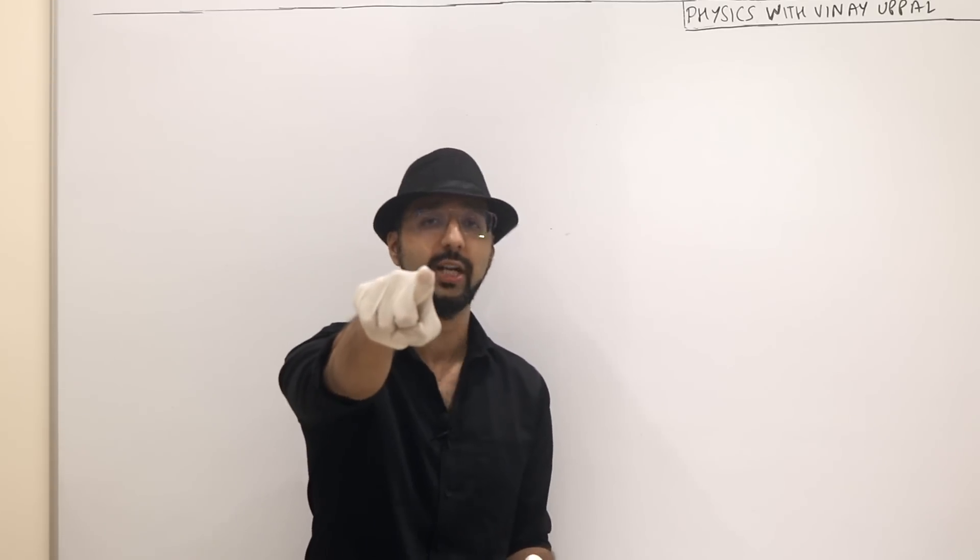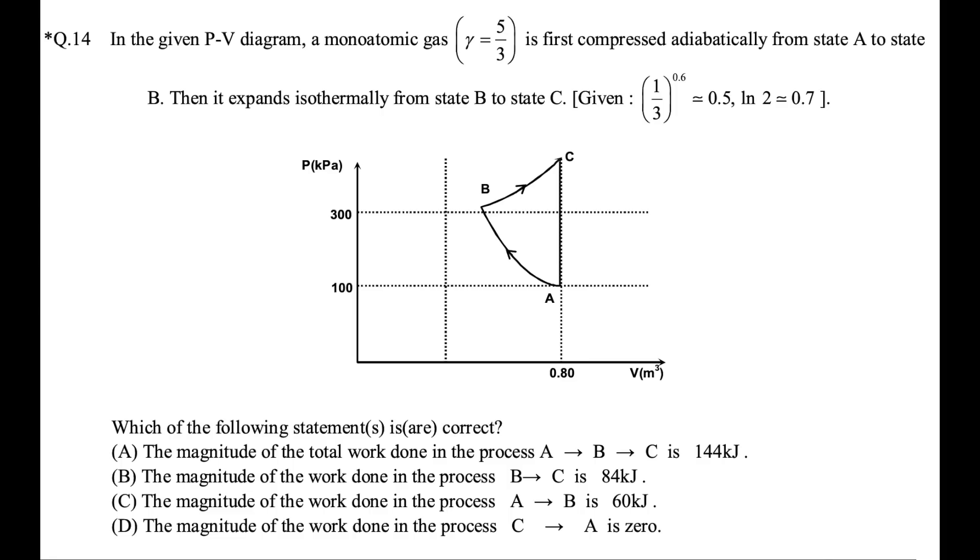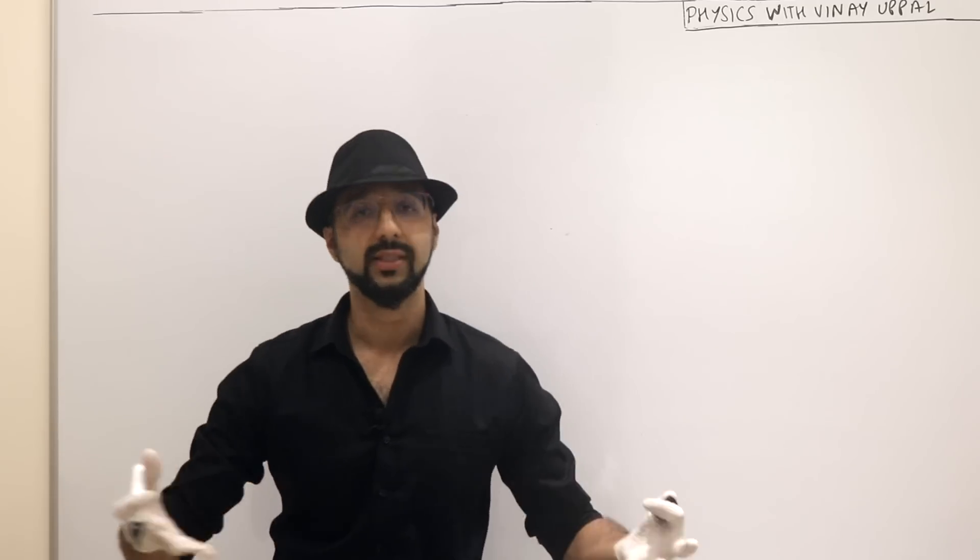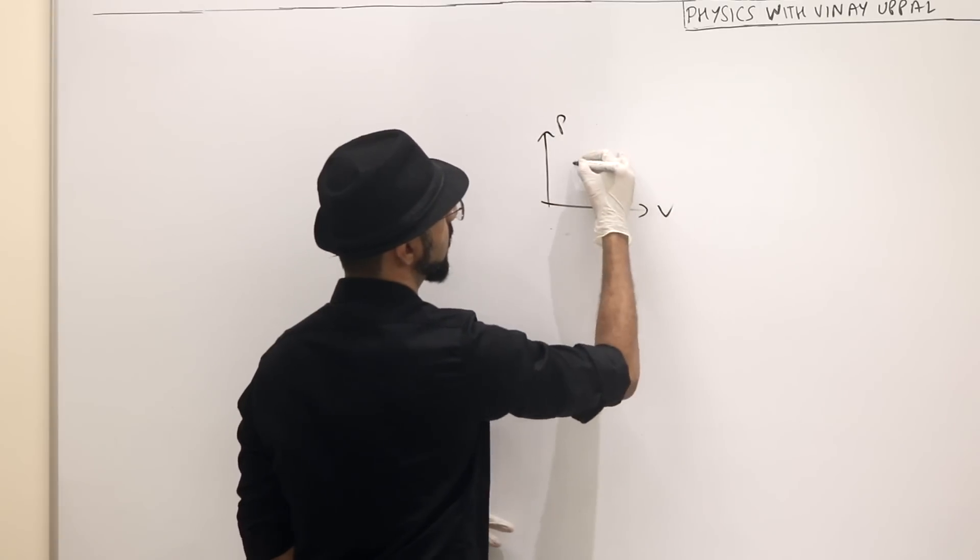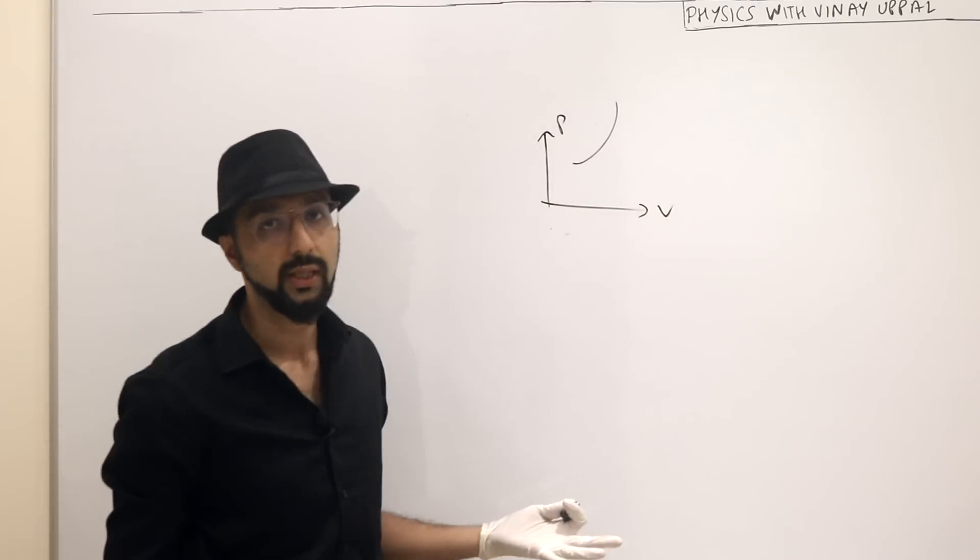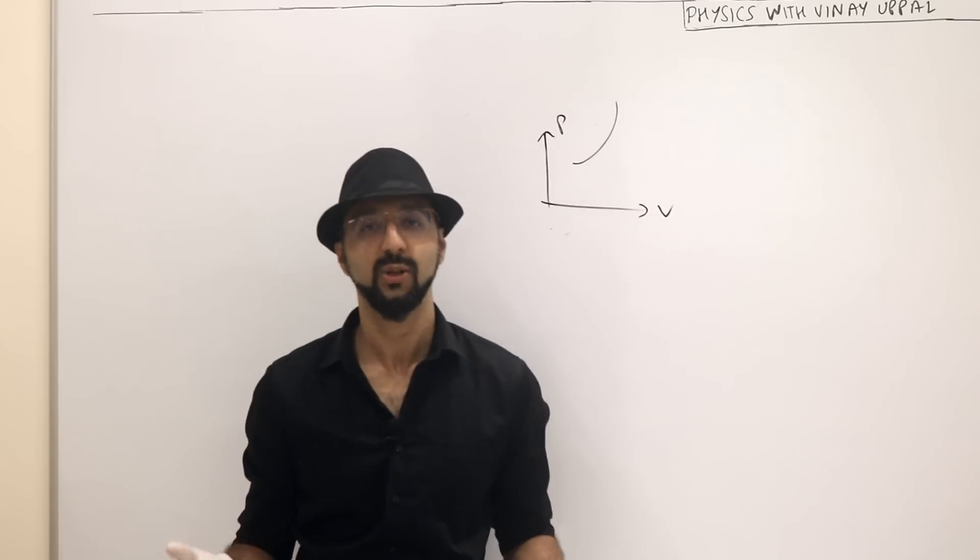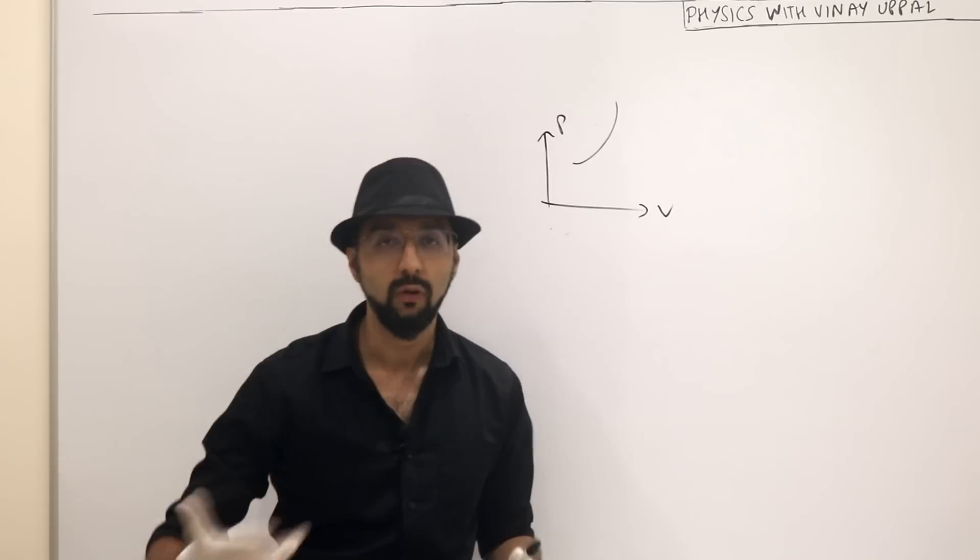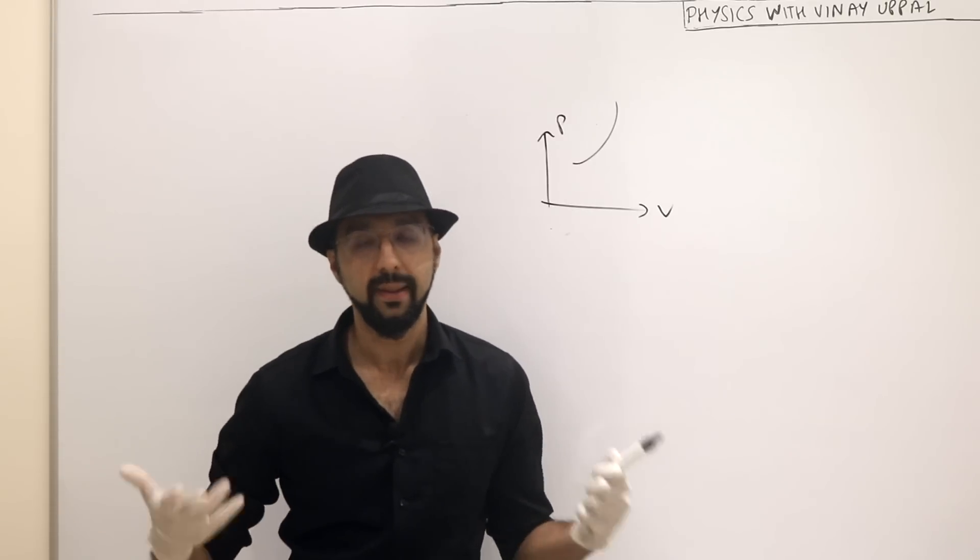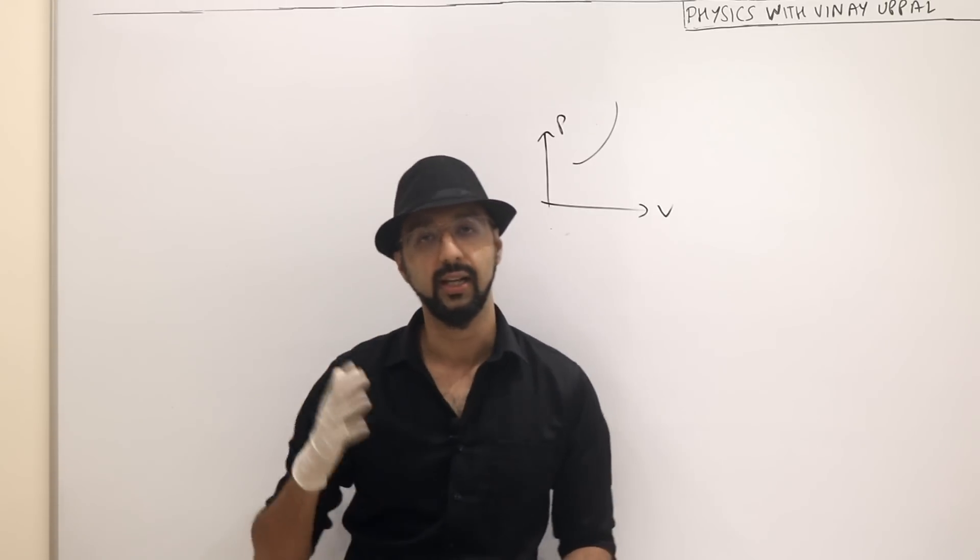Take a look at the question from JEE 2022. Now, you should see isothermal expansion, PV graph. Isothermal expansion B to C. How is that even possible? How does that even get approved by the official committee that makes the papers? It is shocking. It's like every year.